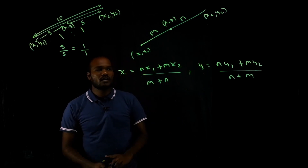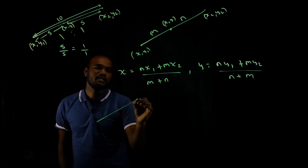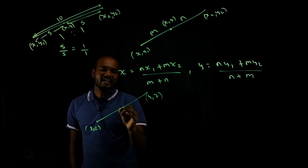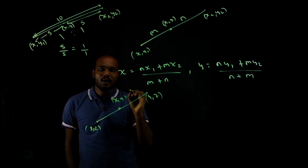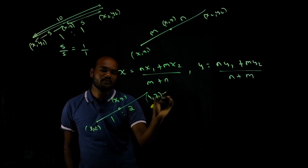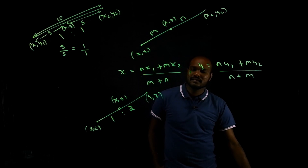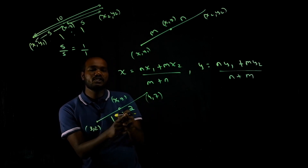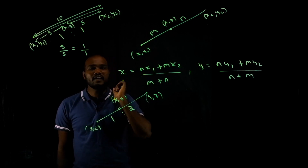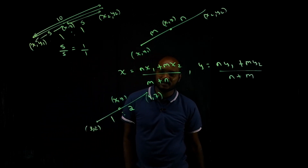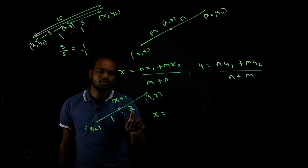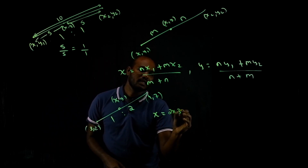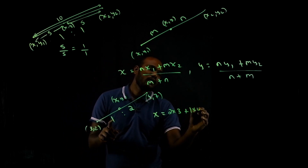Let's take an example. Let's say we have points 3 comma 2 and 4 comma 7. There is a point x comma y which is dividing the distance in ratio 1 is to 2. To find x, we only consider the x coordinates: n into x1 is 2 into 3, plus m into x2 is 1 into 4, divided by 1 plus 2.